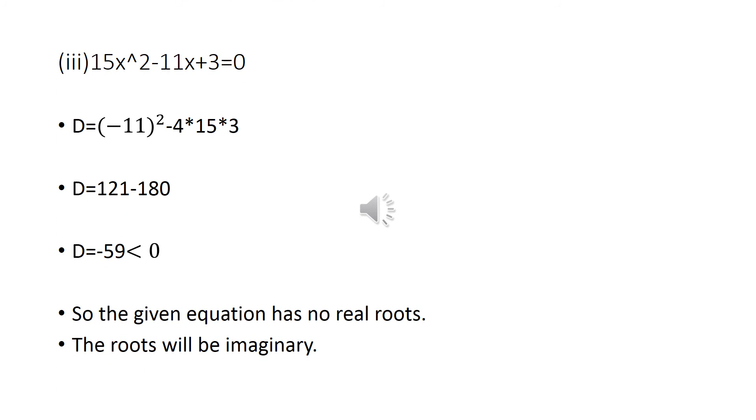Finding the discriminant d of this equation using the formula b square minus 4ac, we will get d equals negative 59, which is less than 0. This shows that the given equation has no real roots, only the roots will be imaginary.